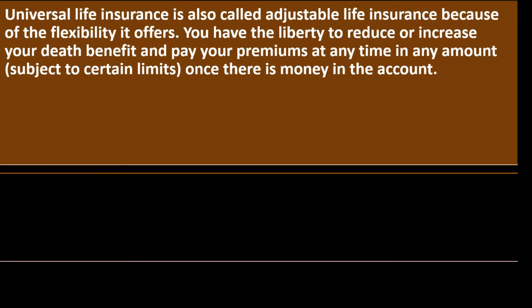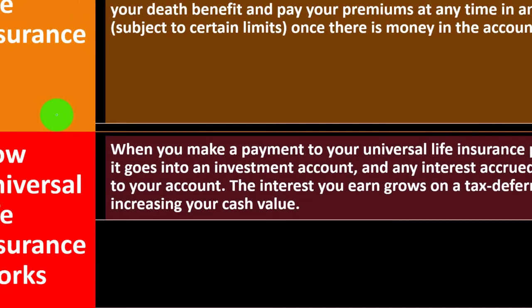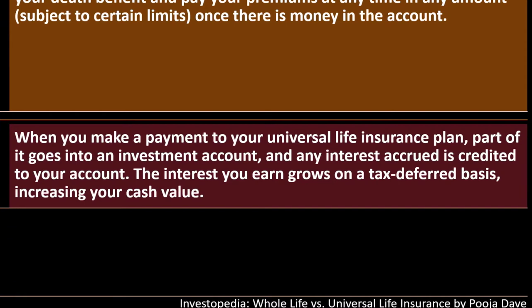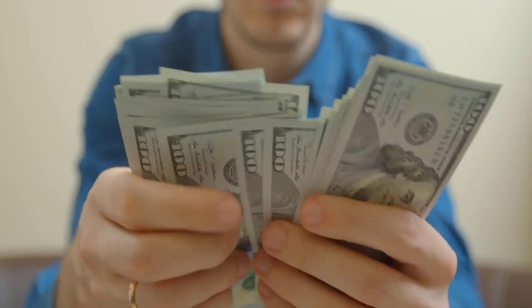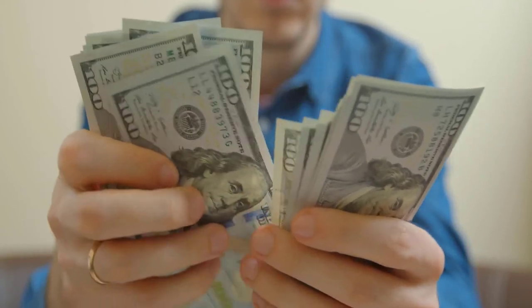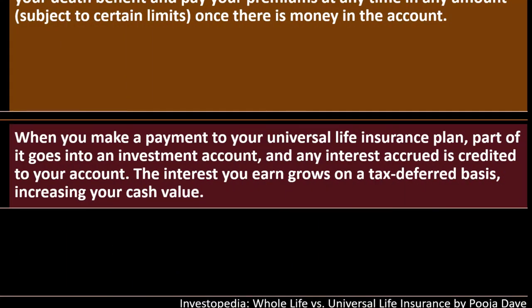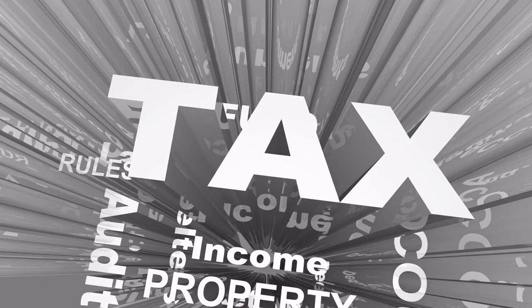Universal life insurance is also called adjustable life insurance because of the flexibility it offers. You have the liberty to reduce or increase your death benefit and pay your premiums at any time in any amount, subject to certain limitations, once there is money in the account. When you make a payment to your universal life insurance plan, part of it goes into the investment account and any interest accrued is credited to your account. The interest you earn grows on a tax-deferred basis, meaning you're not paying taxes on it while it's growing. When you get the money out, that's when you might be paying the taxes, similar to an IRA or 401k plan.